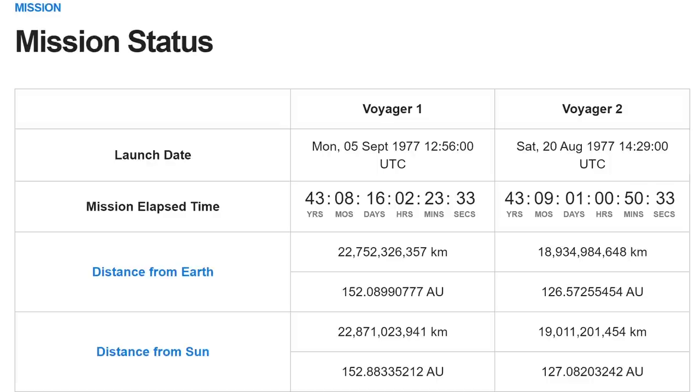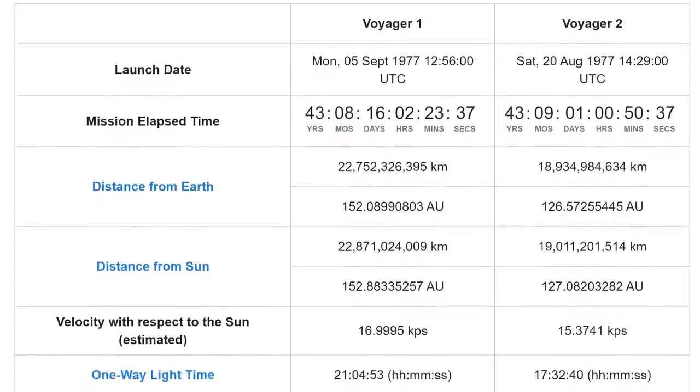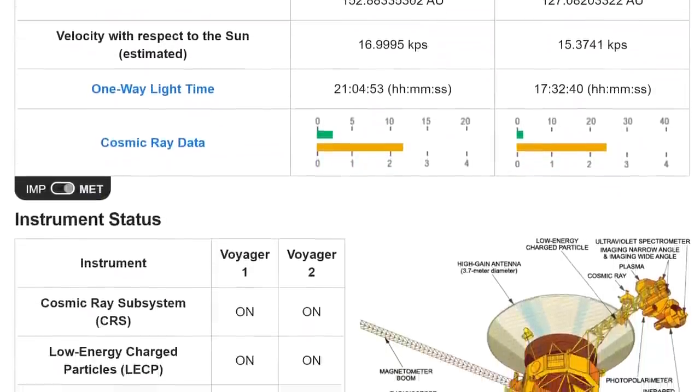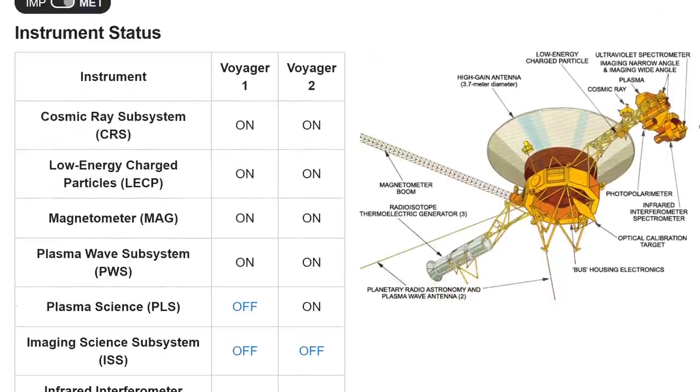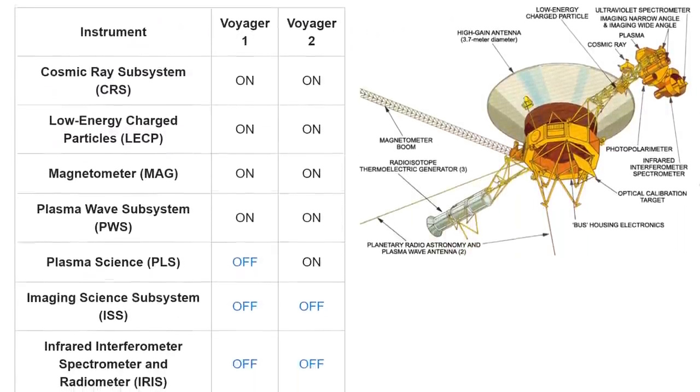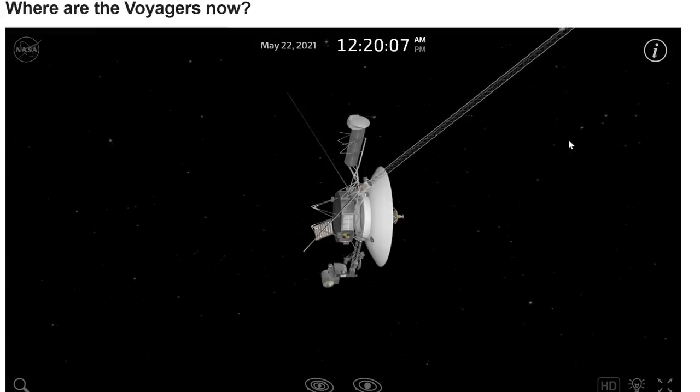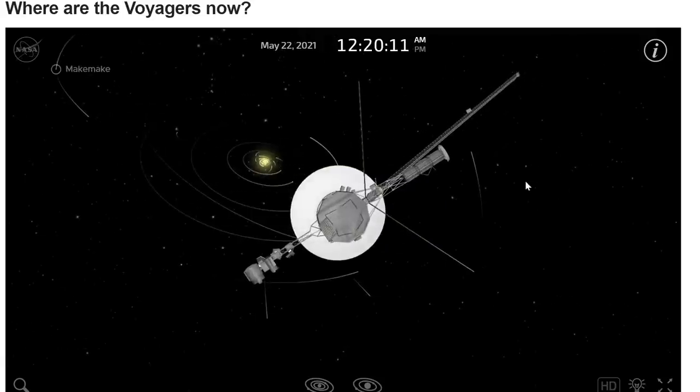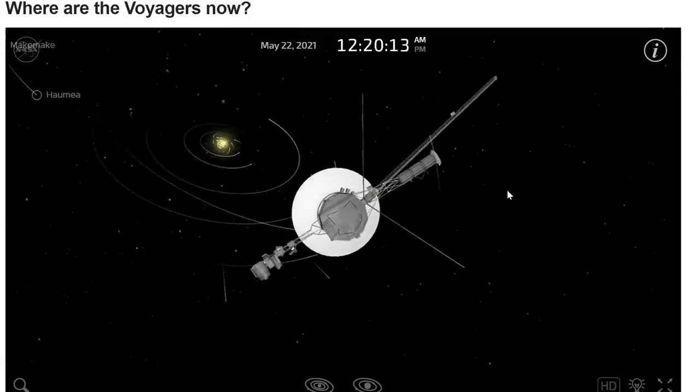NASA created this website specifically for the Voyager missions, allowing us to see the mission status, and also showing us some of the parameters that they also get to detect here from planet Earth. It also shows you which instruments are still functioning, and which ones have been disabled, because there's just not enough power. And more importantly, it also allows you to see exactly where the probes are located in comparison to everything else in the solar system.